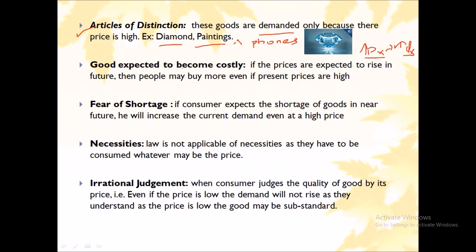The next exception is when goods are expected to become costly in the future. Suppose people expect that the price of petrol will increase tomorrow — even though it hasn't increased yet, they will increase their current demand in anticipation. As per the Law of Demand, at high prices quantity should fall, but here even at high current prices, quantity demanded increases because consumers know the price will rise further.